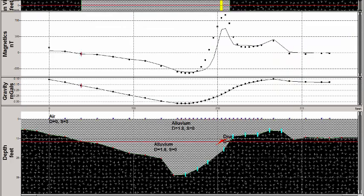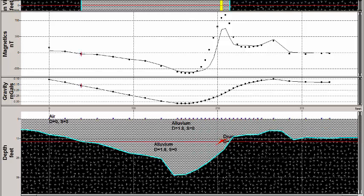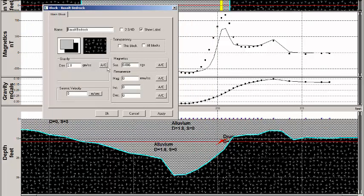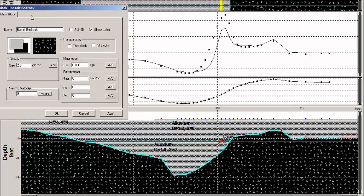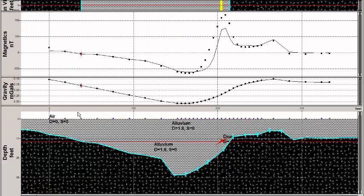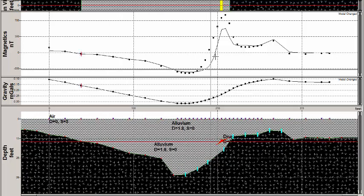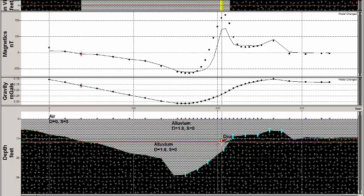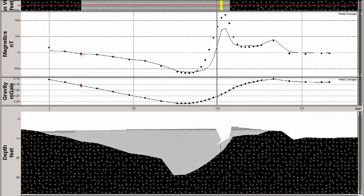Let me just come back here to the model and note that in our model here, we've given the bedrock a susceptibility of 0.006. Now, if we undertake an inversion here of the bedrock in this region and don't turn off the susceptibility - we could also select these points for inversion as well.